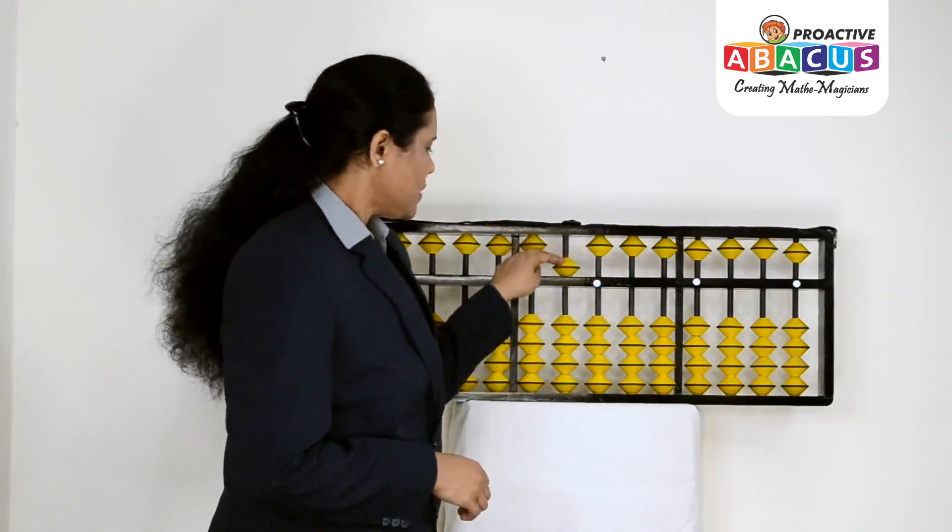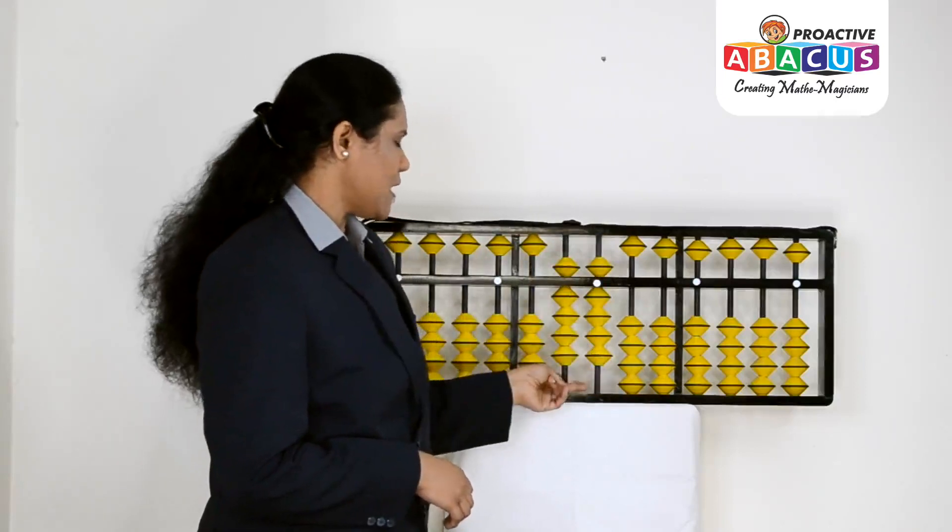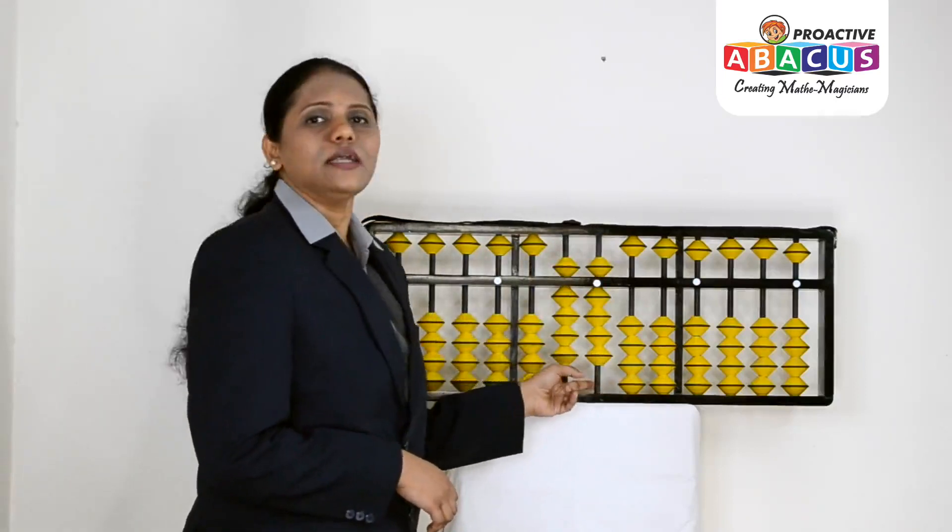Next, we show 99. Let's start with 90, then unit place is 9 beads. That means 99. In this case, our value bar goes to 90 and we add 9.